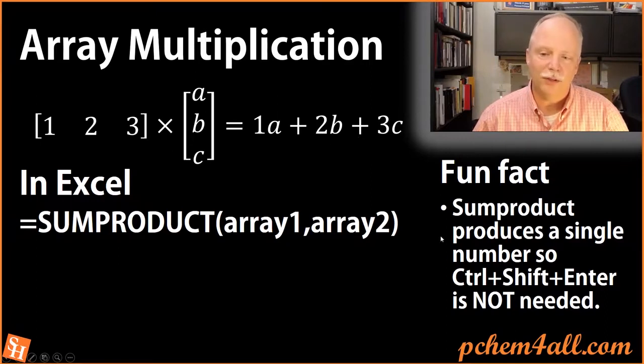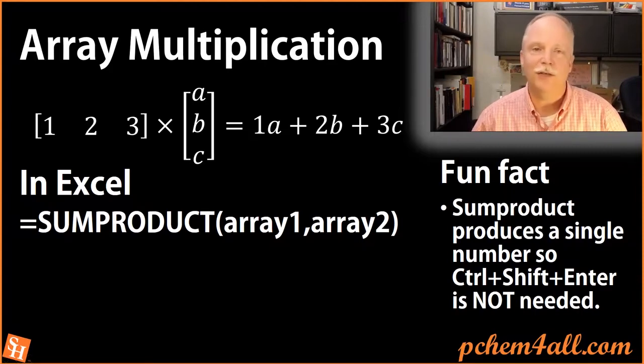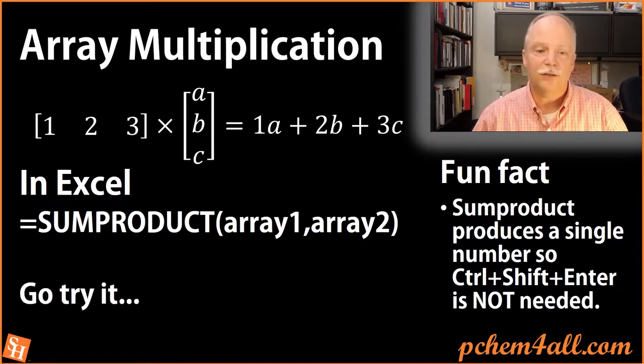SUMPRODUCT takes the first value in the first array and multiplies it by the first value in the second array, likewise for the second and third, and adds those together. Since SUMPRODUCT produces a single number, you don't need to use Ctrl+Shift+Enter — just type it into a single cell and you get the result. So let's go try that.